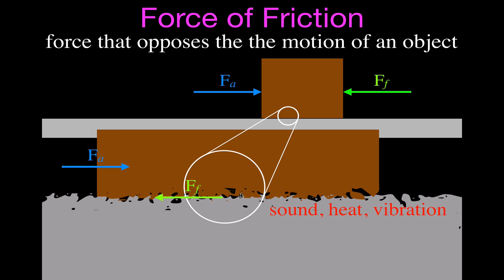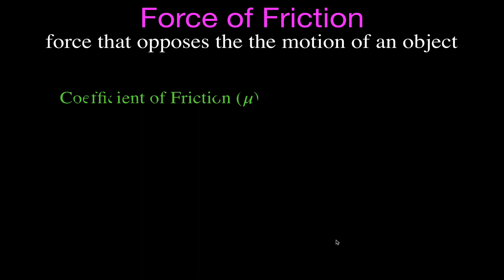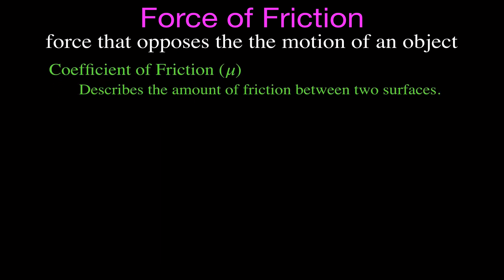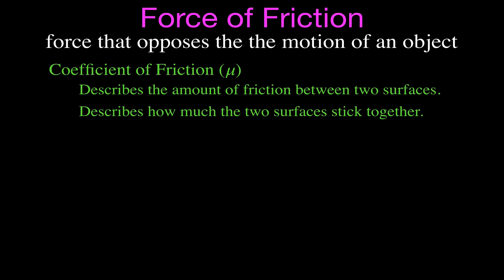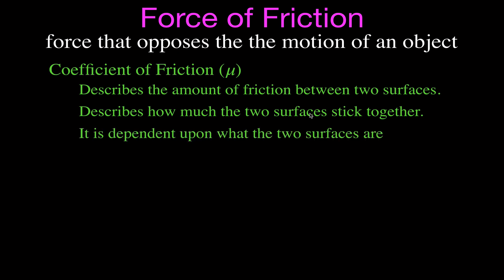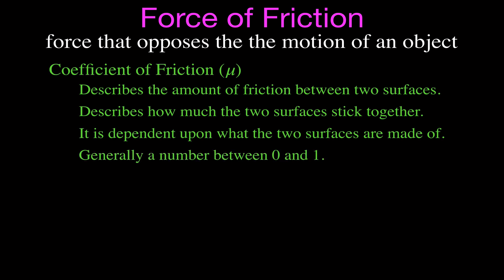The amount of friction between two surfaces is described by something called the coefficient of friction, given the symbol mu — one of the letters in the Greek alphabet. The coefficient of friction describes the amount of friction between two surfaces: the higher the coefficient of friction, the higher the friction force will be. It describes how much the two surfaces stick together and depends on what the two surfaces are made of. Every pair of surfaces has a different coefficient of friction, and generally it's a number between zero and one. It has no units because you're dividing force by force.